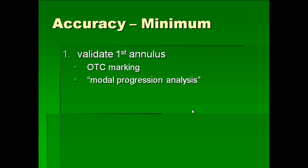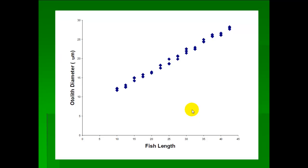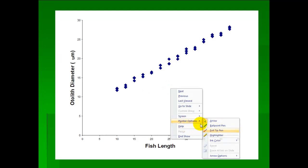The modal progression analysis is this neat technique that gives you a good estimate of where that first annulus should be. So we'll start off, we'll take a big sample of fish and look at this graph here.